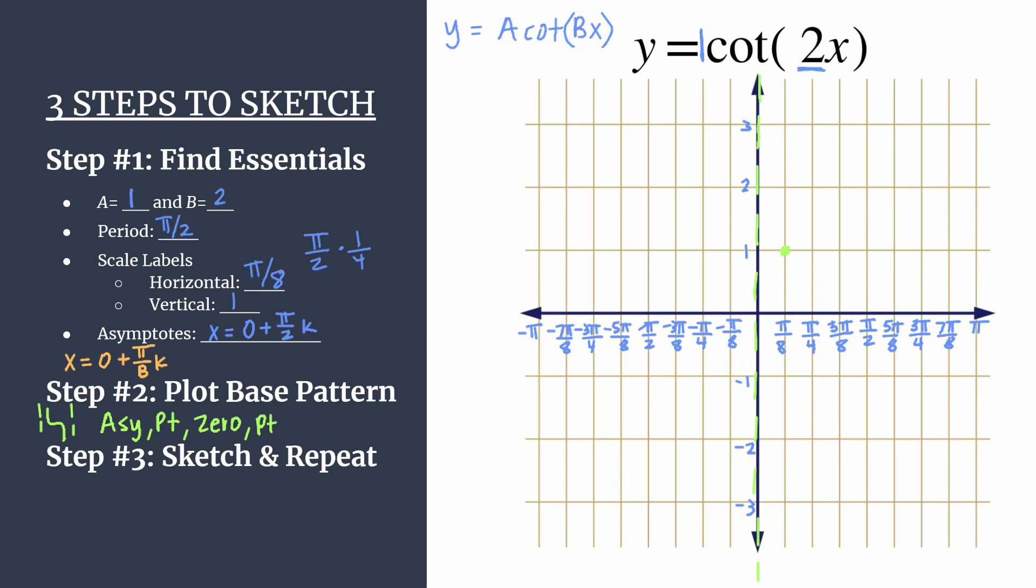At the next horizontal tick mark, moving to the right, at pi over four, we'll have a zero or an x-intercept. And our final piece in our base pattern is our lower curve shaping point. So this will happen at the third horizontal tick mark, to the right of the origin. And the y-coordinate will be the value that's opposite of a, so negative one.